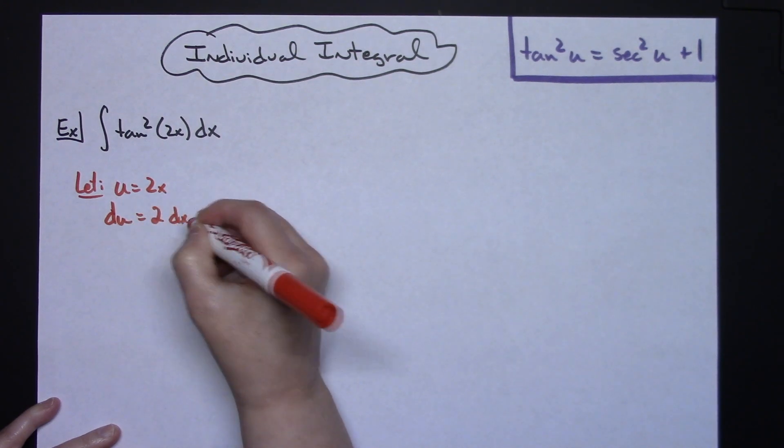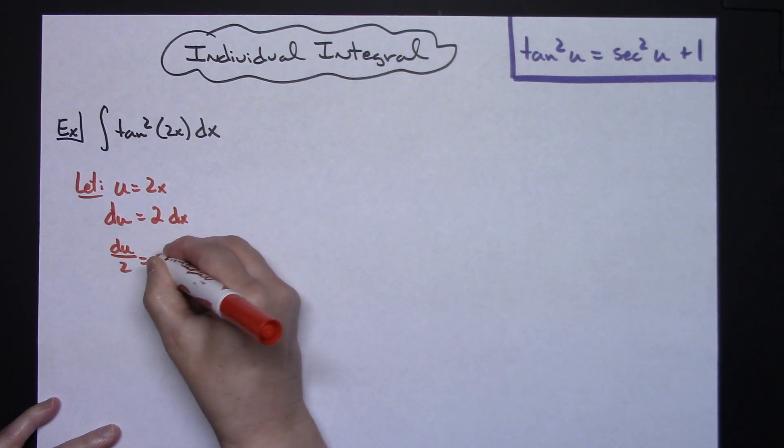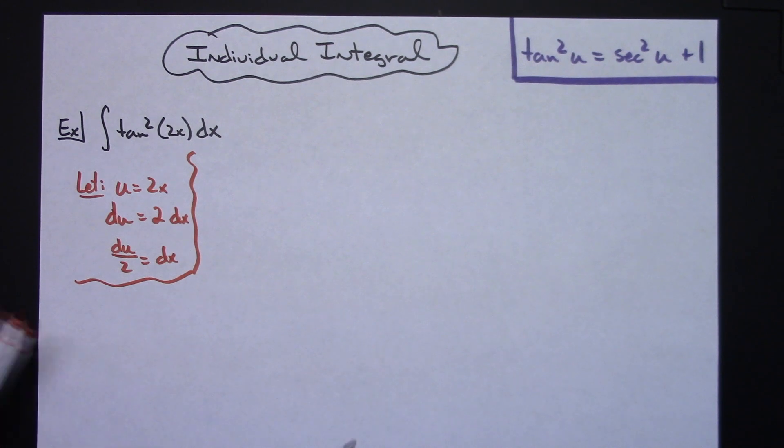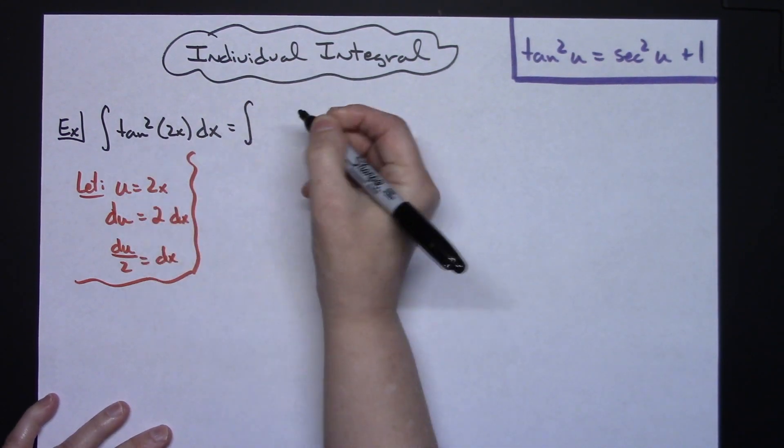I'm going to go ahead and solve all the way down for that dx, so I will have du over 2 is equal to dx. Now at that point, I'm going to come back up here and start doing some substitutions. My tangent squared is going to stay.